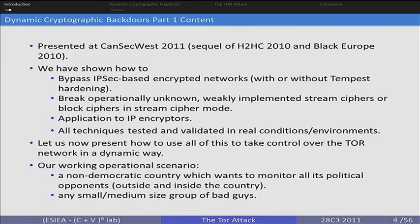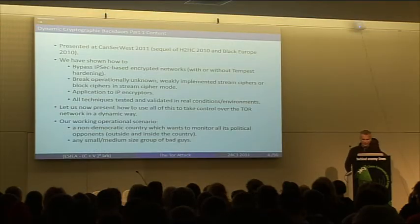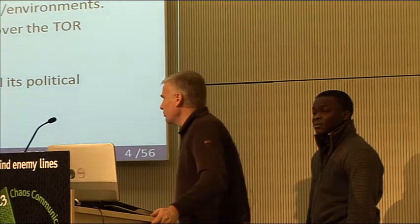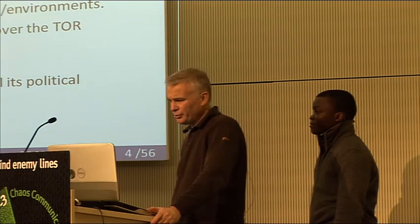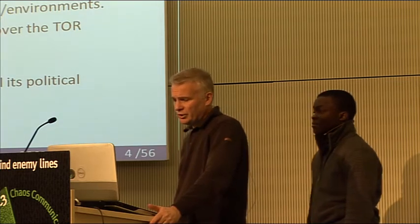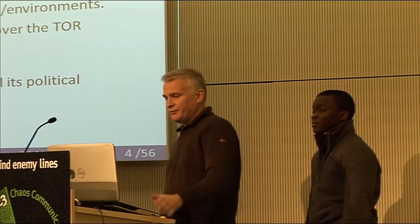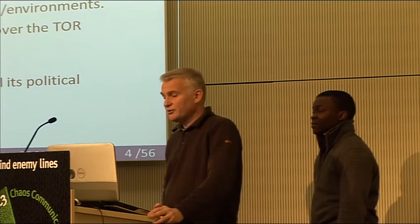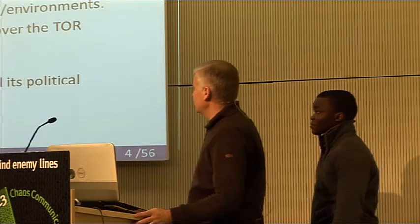So now we are going to explain how, as we see it, it is possible to apply this kind of techniques over a network, an encrypted network like Tor, or any other network of this type. The starting scenario can be either a non-democratic country — we want to monitor, not to block — the aim is not to block the network, it's quite the contrary, just to monitor and survey all the political opponents, whether inside or outside the country, or any small group of bad guys.